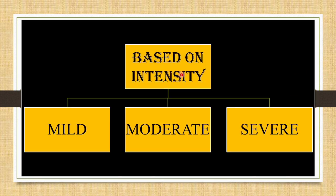The next classification is based on intensity, classified using the visual analog scale into three types: mild, moderate, and severe. Mild pain scores 1 to 3 on the visual analog scale. Moderate pain scores 4 to 6, and severe pain scores 6 to 10. A score of 10 represents intolerable or worst pain possible, while 0 means no pain.